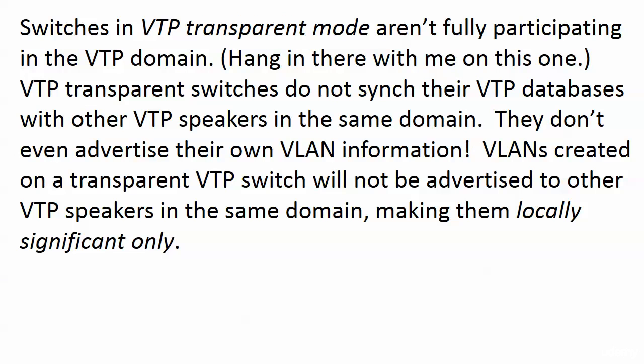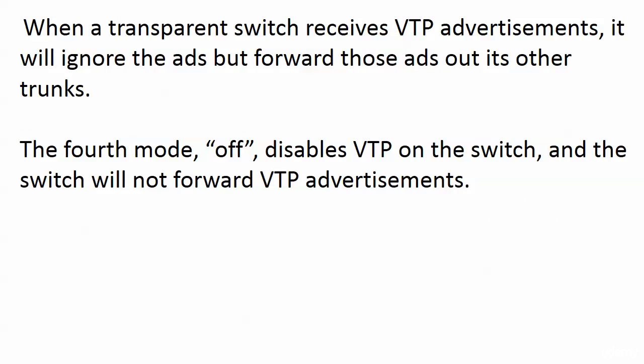You might be thinking — well, what do they do? VLANs created on a transparent VTP switch are what we call locally significant only. Sometimes you make a change and it gets advertised; sometimes it only matters to the local device. In transparent mode, VLANs you create are not advertised to other VTP speakers. And when a transparent switch receives a VTP advertisement, it will ignore the ad but forward it out its other trunks.